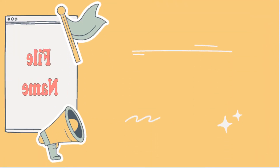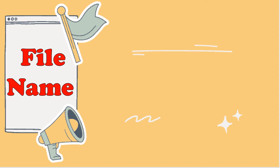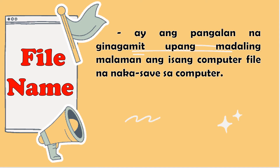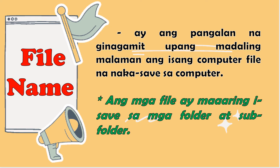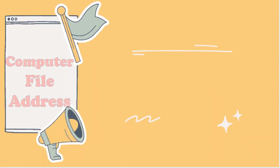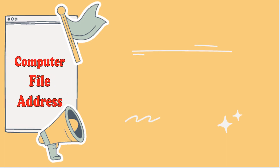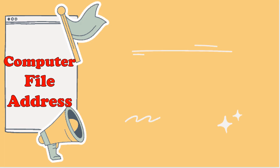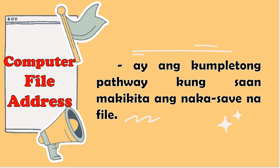Lahat ng files sa ating computer ay may file name. Ang file name ay ang pangalan na ginagamit upang madaling malaman ang isang computer file na nakasave sa computer. Ang mga file ay maaaring isave sa mga folder at subfolder. Lahat ng file name ay mayroong computer file address — ang kumpletong pathway kung saan makikita ang nakasave na file.